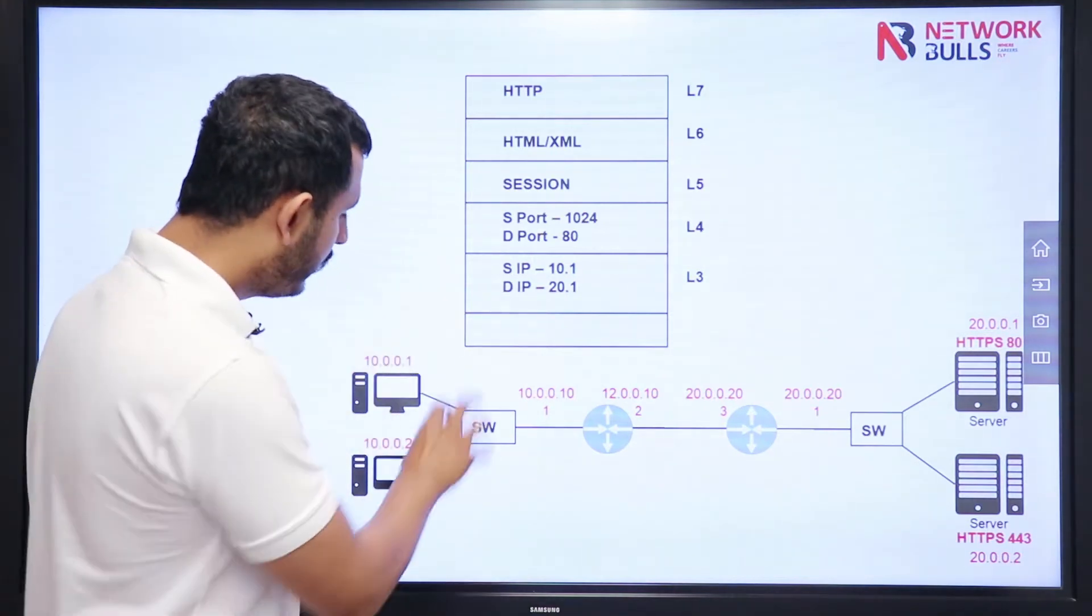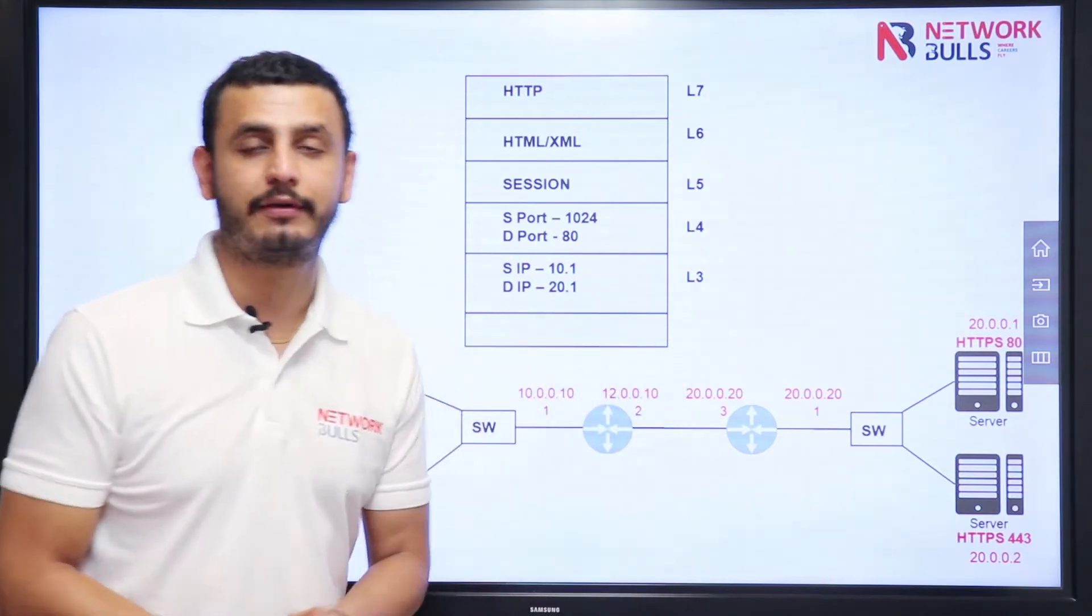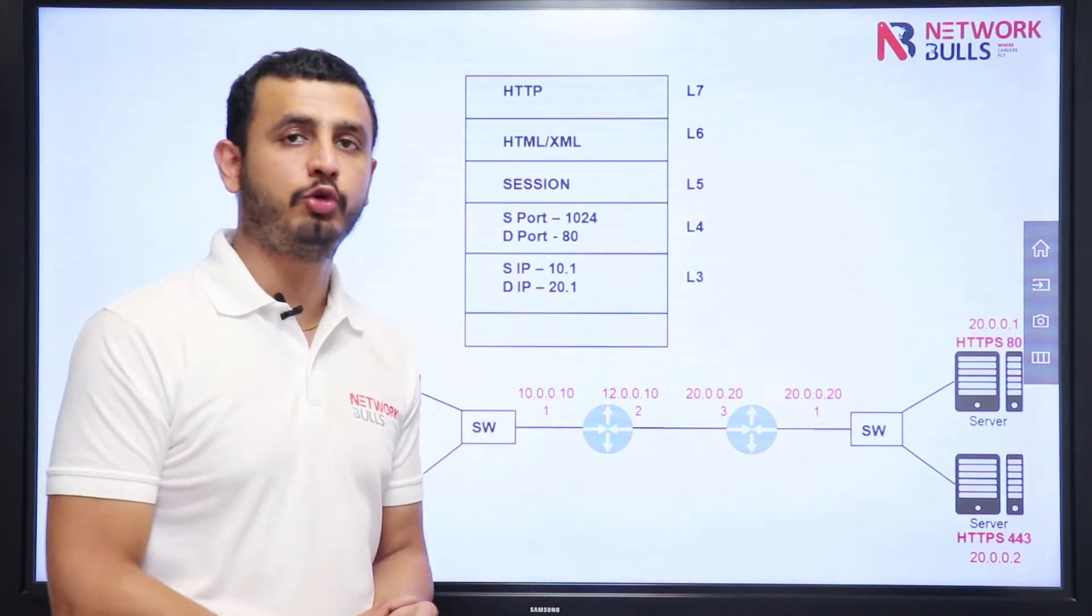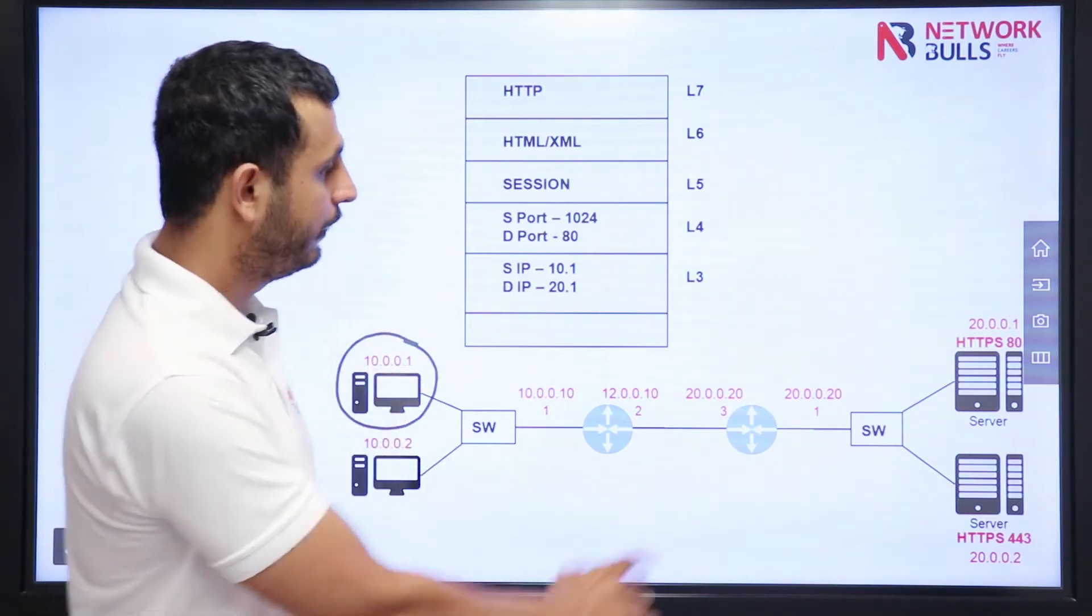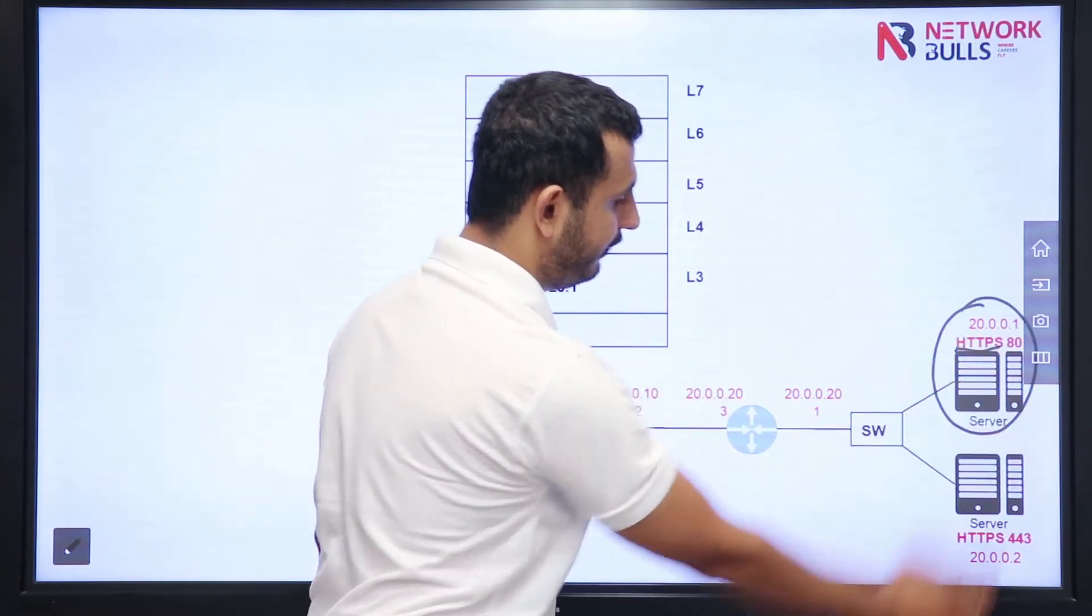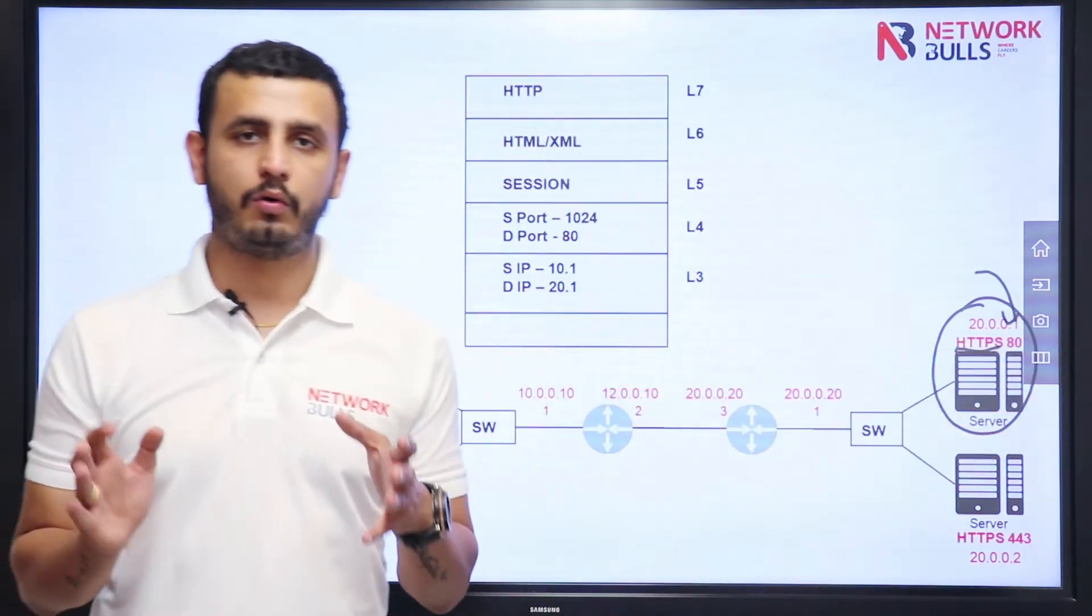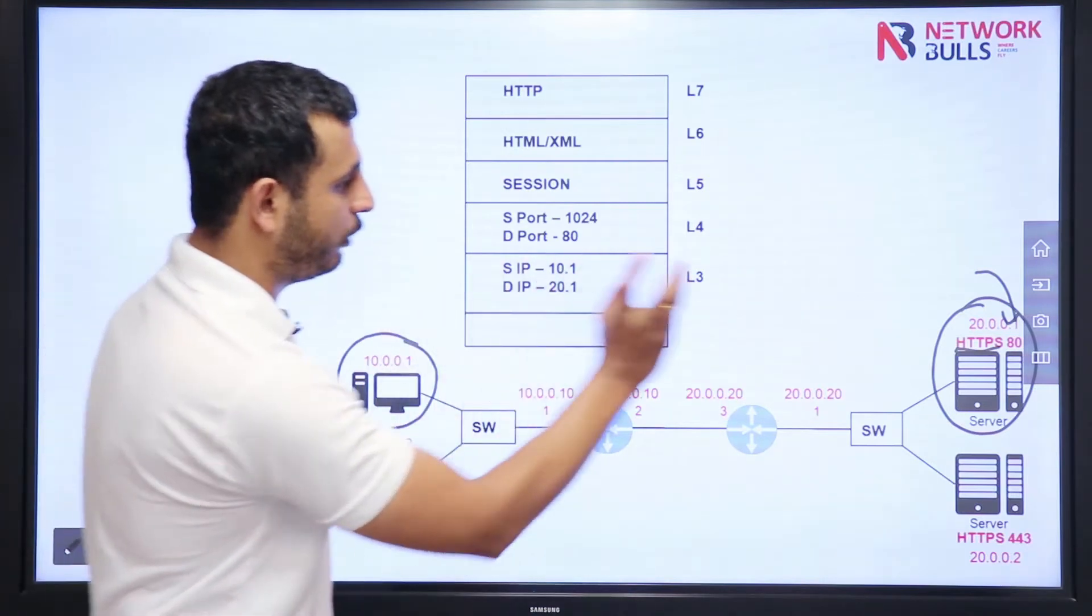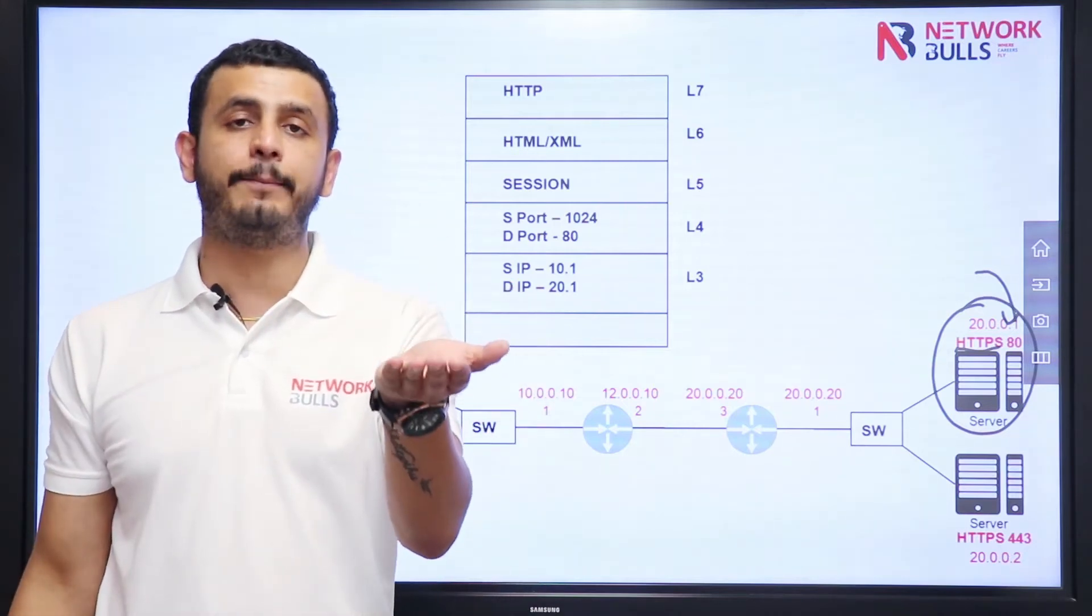I told you switches create networks and routers connect networks. Let me give you an example to make you understand the use of network layer. Let's say this computer wants to communicate with this server—this is an HTTP server listening at port number 80. Now the concern is whenever this user sends a request to the server, all of us know that the source port will be a random port and destination port will be 80.